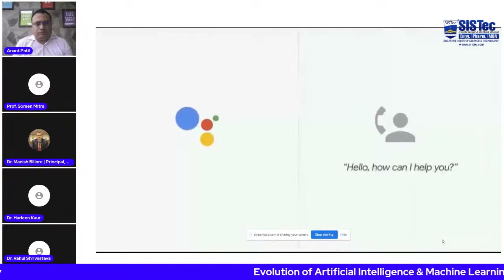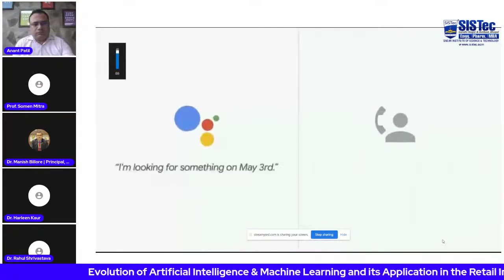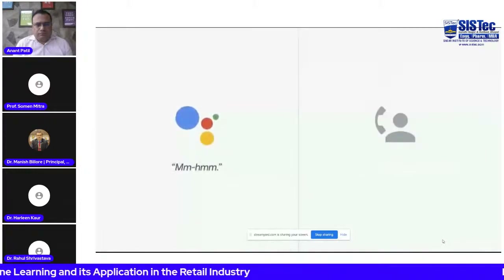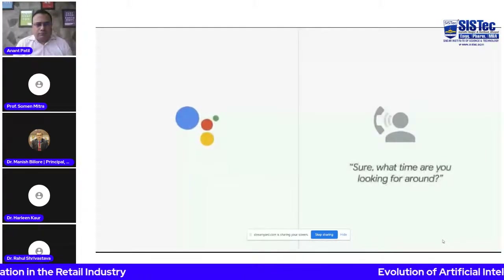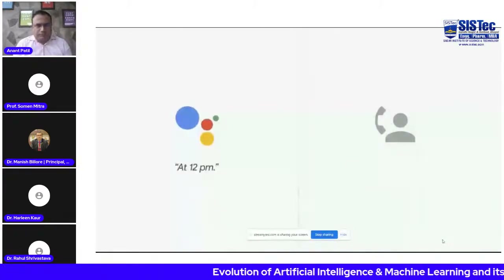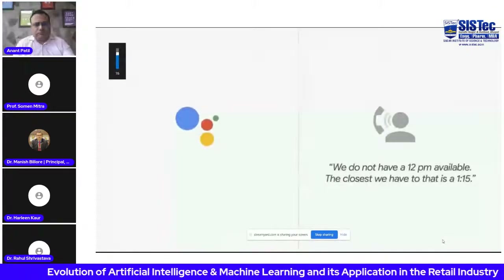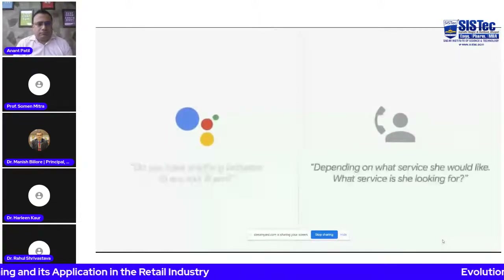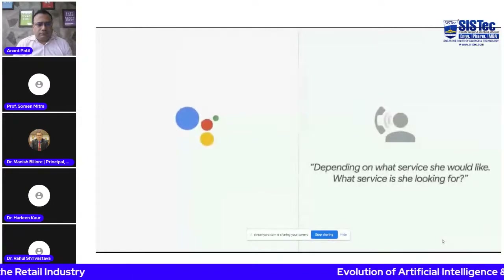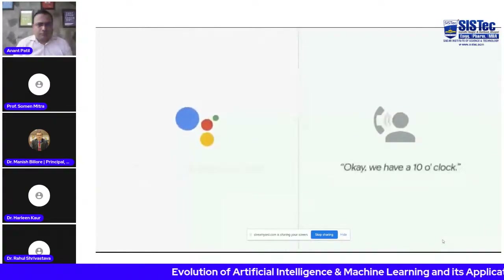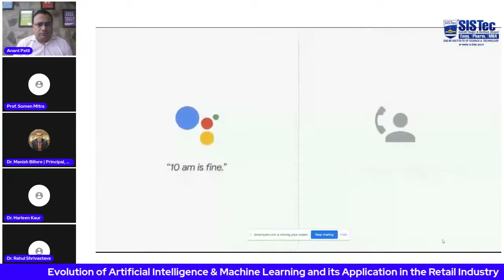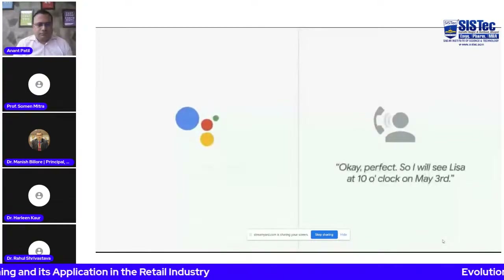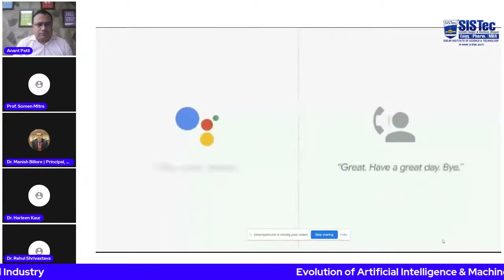Google Assistant call to salon: 'Hi, I'm calling to book a woman's haircut for a client. I'm looking for something on May 3rd.' Salon: 'What time are you looking for?' Assistant: 'Around 12 PM.' Salon: 'We don't have 12 PM available; the closest is 1:15.' Assistant: 'Do you have anything between 10 AM and 12 PM?' Salon: 'We have a 10 o'clock.' Assistant: '10 AM is fine.' Salon: 'First name?' Assistant: 'Lisa.' Salon: 'I'll see Lisa at 10 o'clock on May 3rd. Great, have a great day. Bye.'